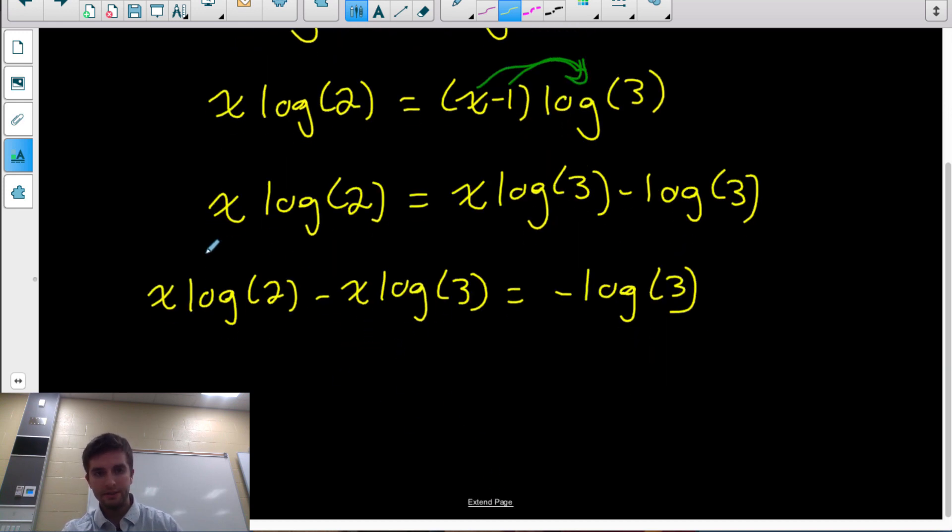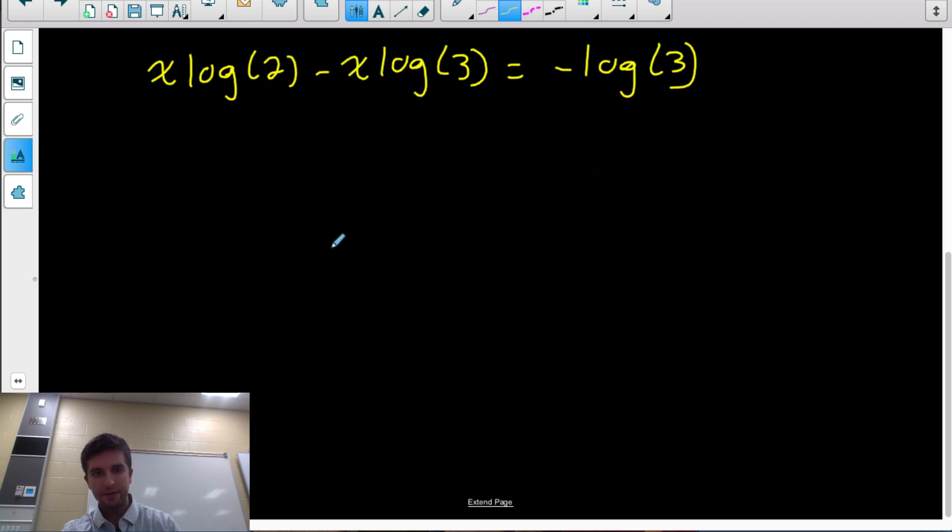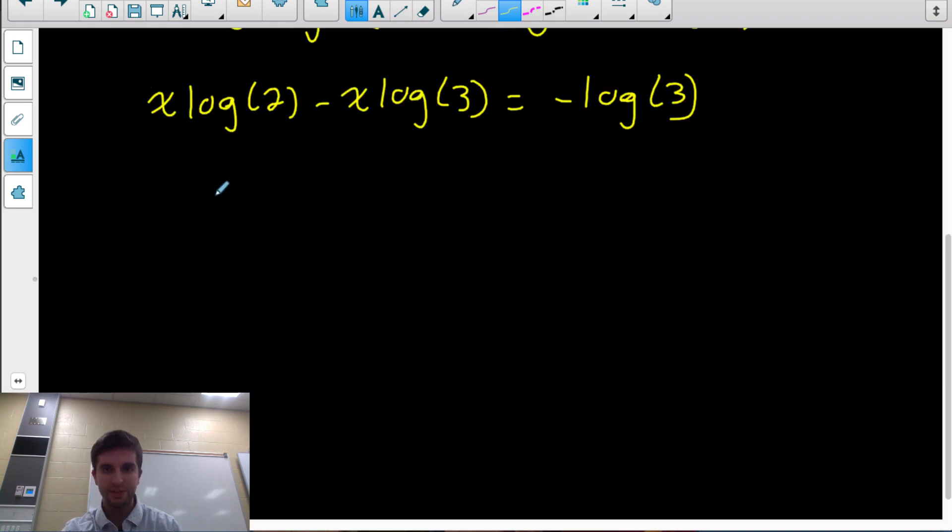Now what I'm going to do is isolate x. I want to know what x is equal to, what value of x makes the equation true. Both of the terms have an x, I want to isolate x. So what I'm going to do is common factor out an x from both terms. Put an x out front, then divide both terms by the x I took out. And I get x times (log 2 minus log 3).